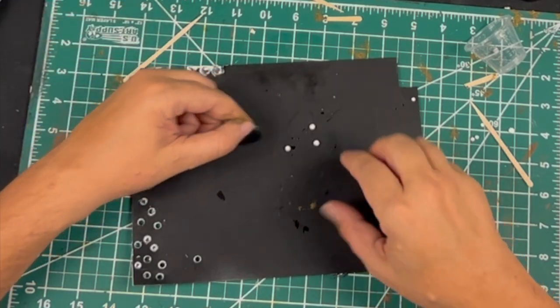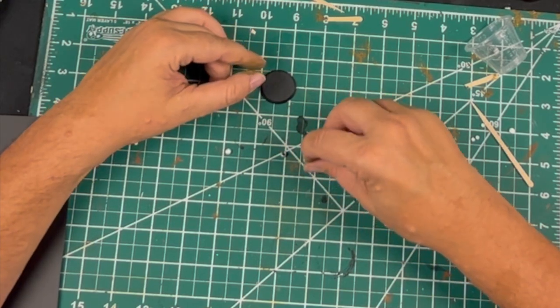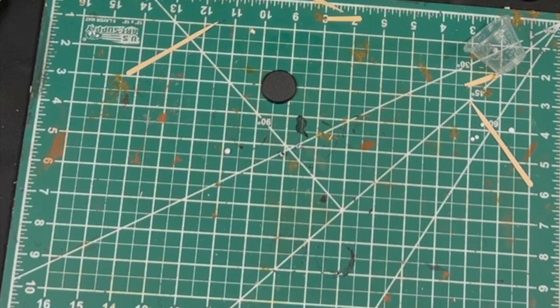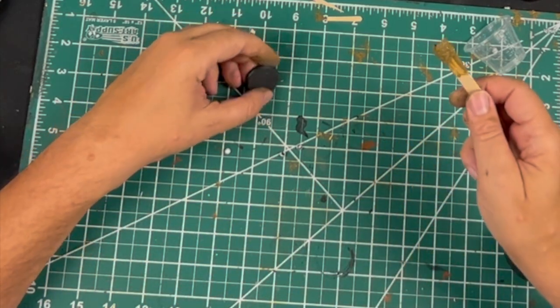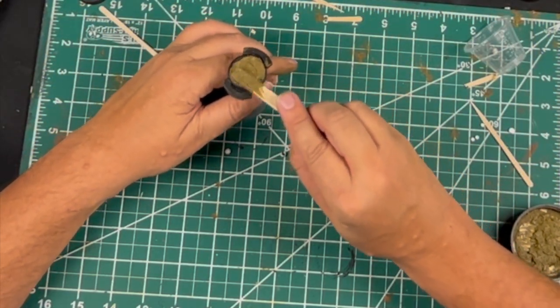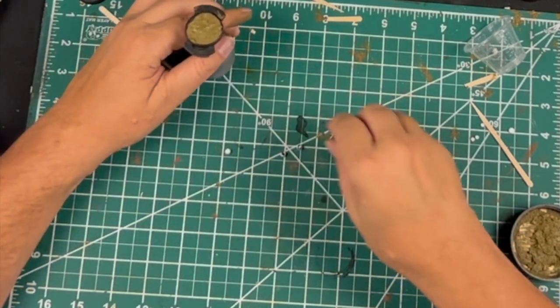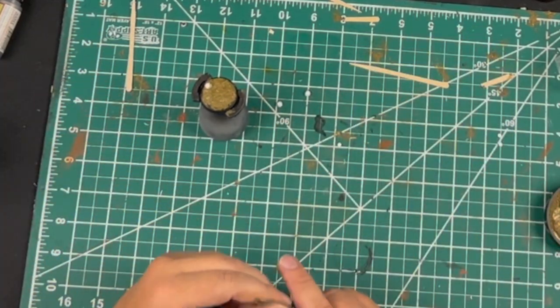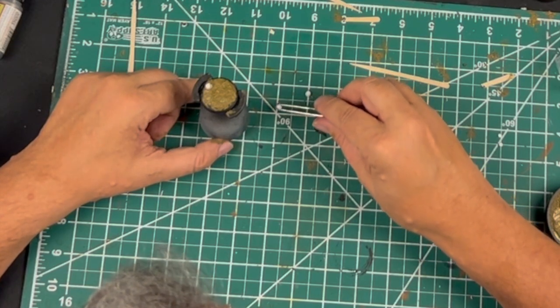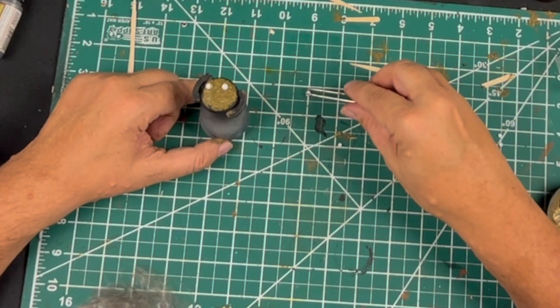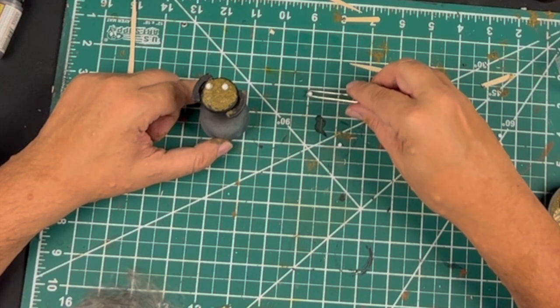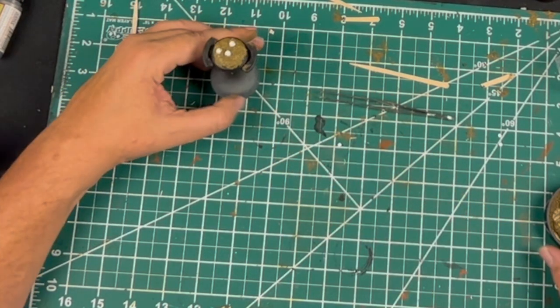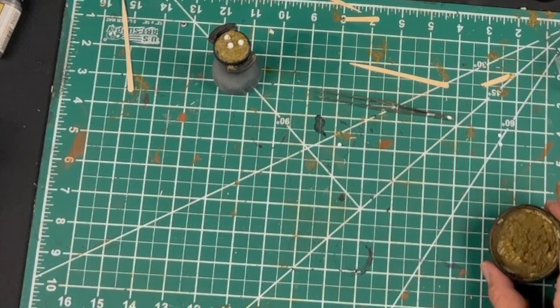Then we just take our base and our three mines. We add some mud to the base, clean it up a little bit, and we're just going to add our mines. Mine one, mine two, and mine three. Now, of course, in real life they would be under the mud, but this is miniature wargaming and we want our things to be seen.